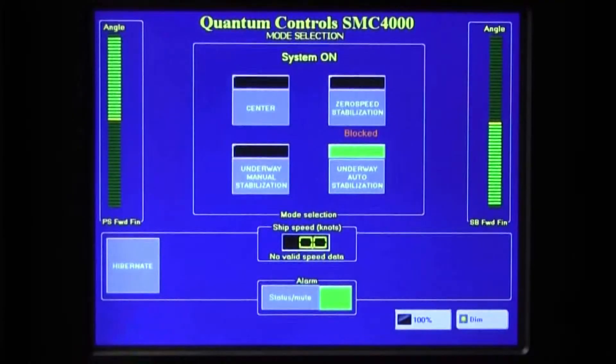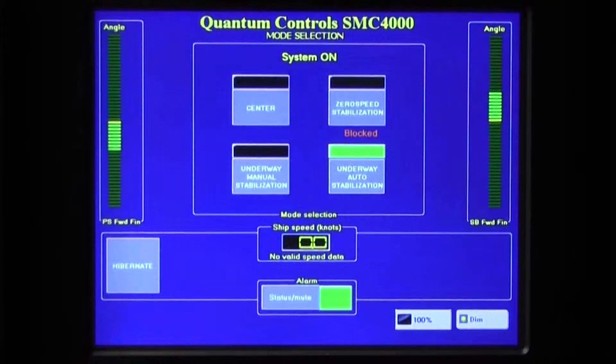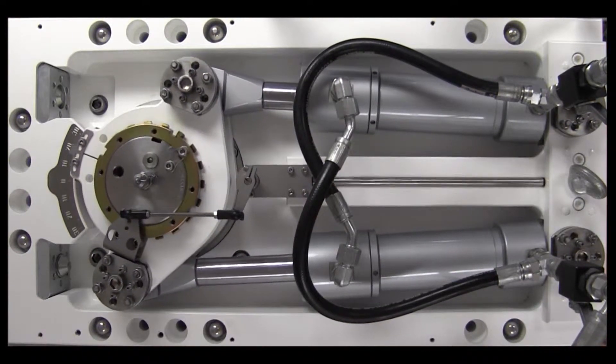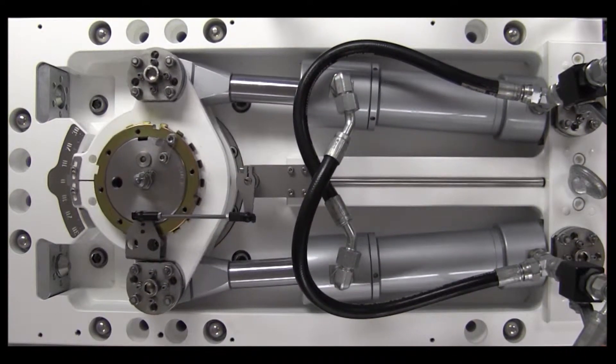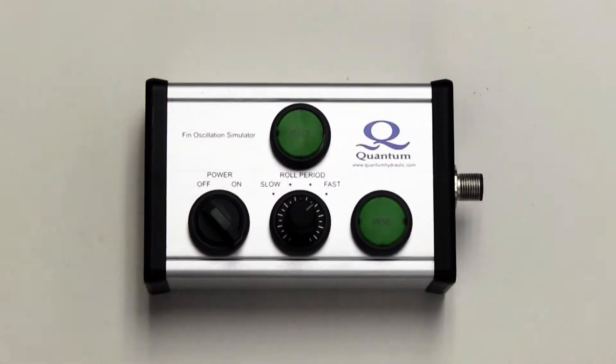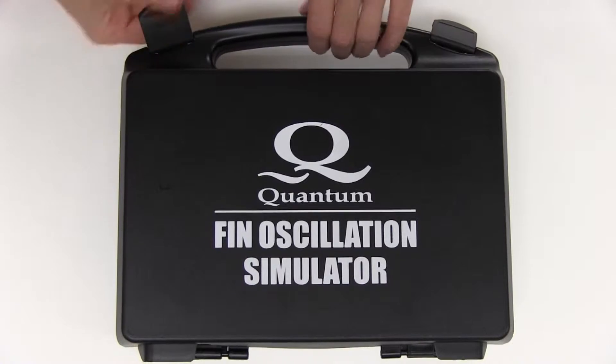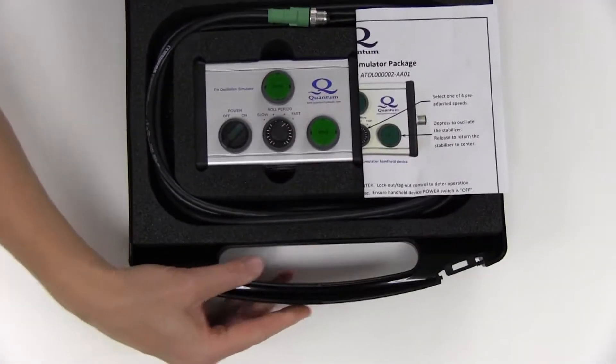The FIN Oscillation Simulator interrupts the stabilizer main controller signal to the stabilizer unit and empowers an operator to locally control the stabilizer motions via this handheld device.